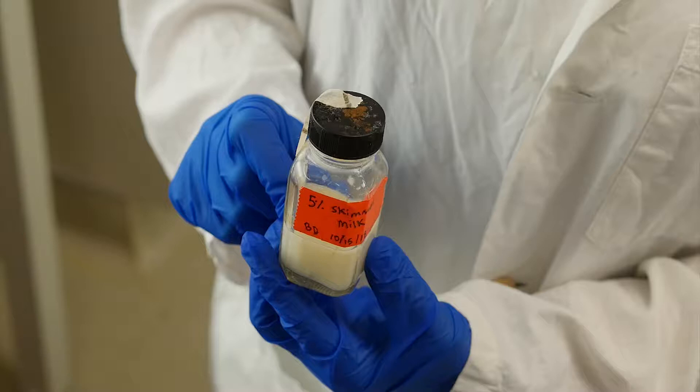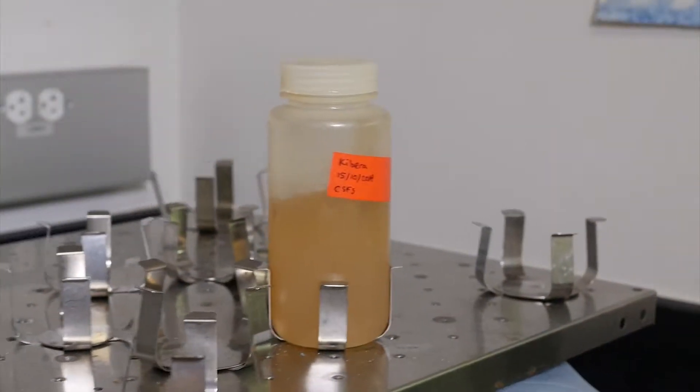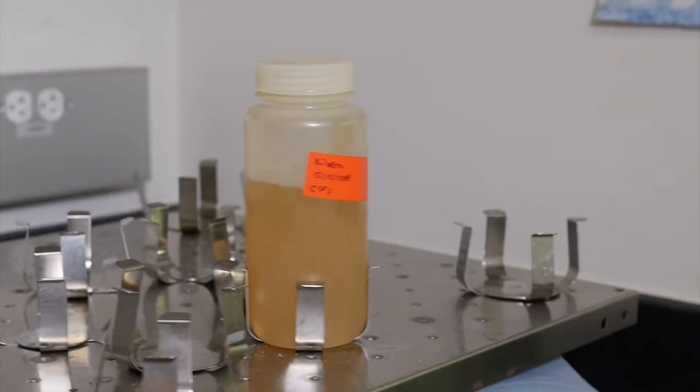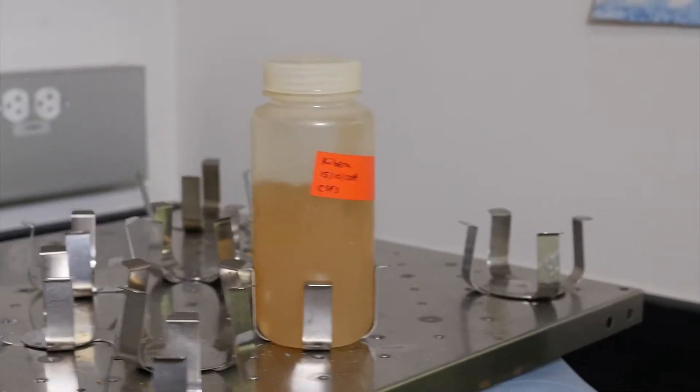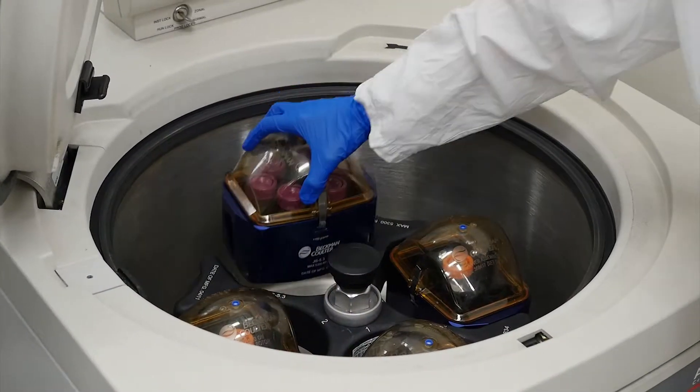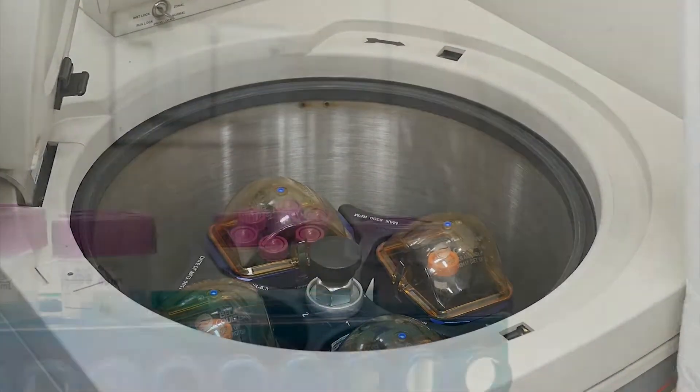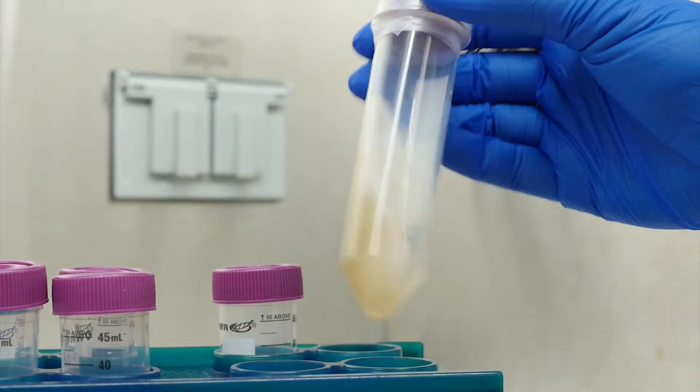The sample is then secondary concentrated by skimmed milk flocculation. After skimmed milk is added to the sample, viruses and bacteria form flocs while shaking. These can then be collected by centrifuging and resuspended in a small volume to increase the method sensitivity.